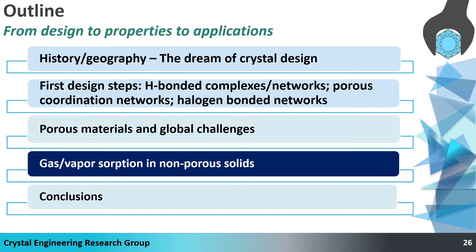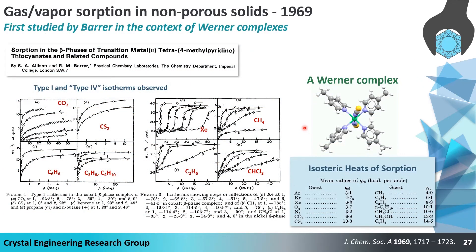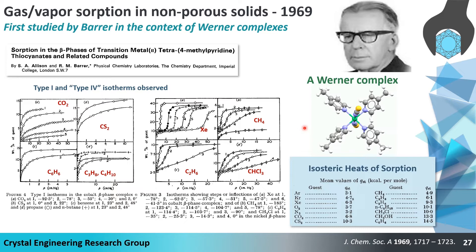After moving from extra-large surface area materials to ultramicroporous materials, now I'd like to go one step further down in pore size — to non-porous solids — and talk about a subject that is certainly understudied but far more prevalent than people realize. What do I mean by gas vapor sorption in non-porous solids? It turns out that Richard Barrer is the pioneer in this area, because he published a paper in 1969 which addressed gas sorption in Werner complexes — non-porous, close-packed molecular solids. A number of the isotherms in that paper are type-one or stepped isotherms similar to those I described for water sorption.